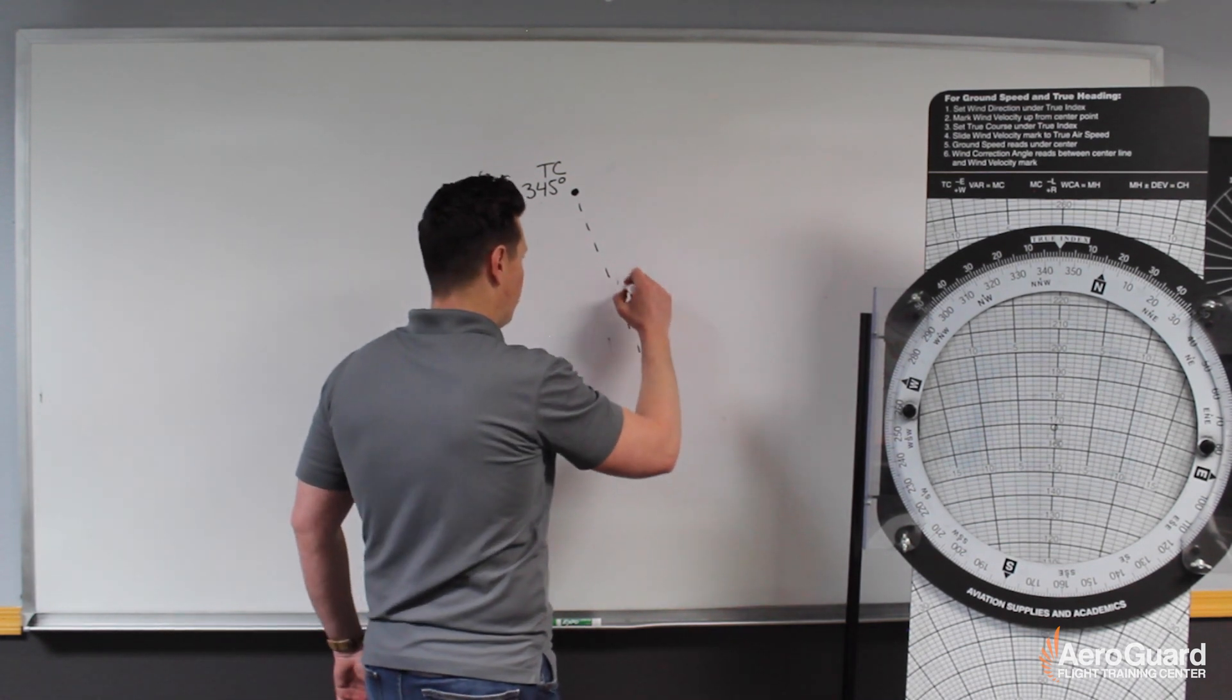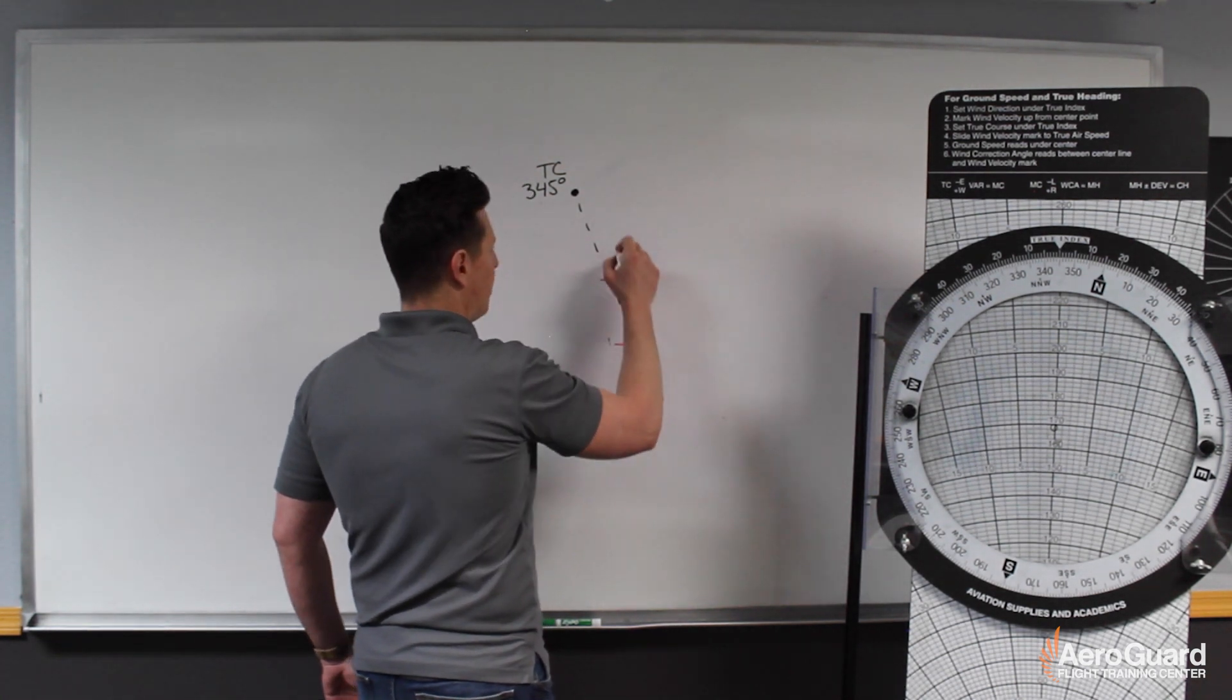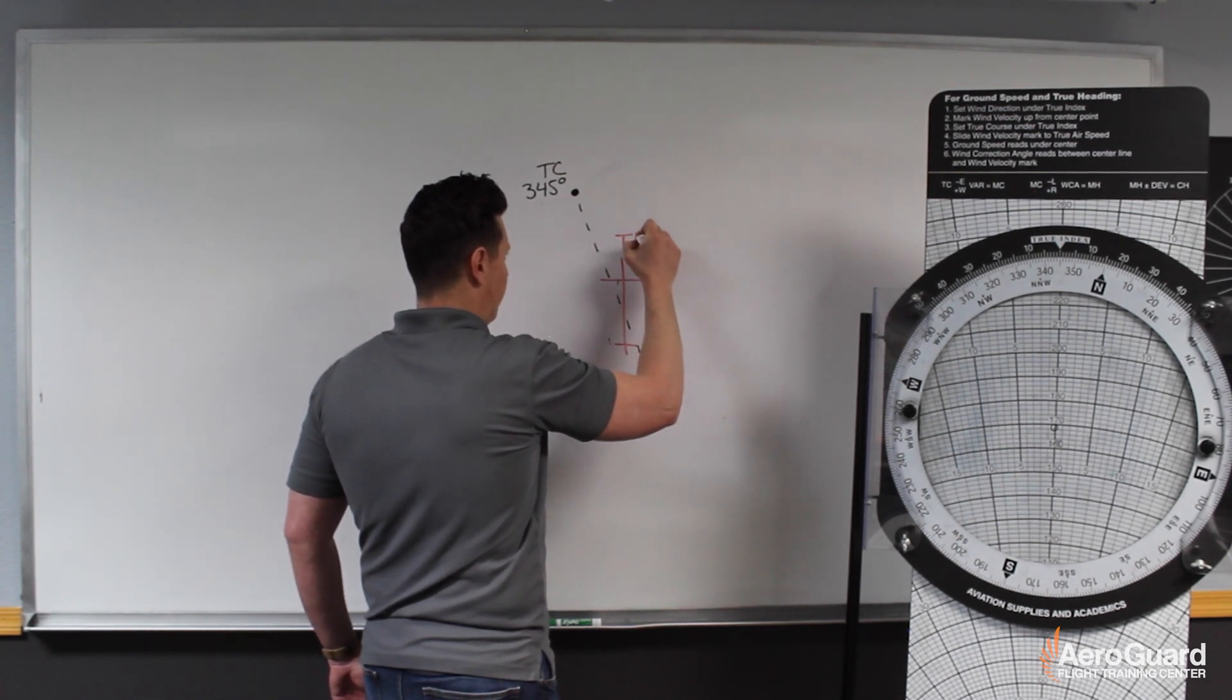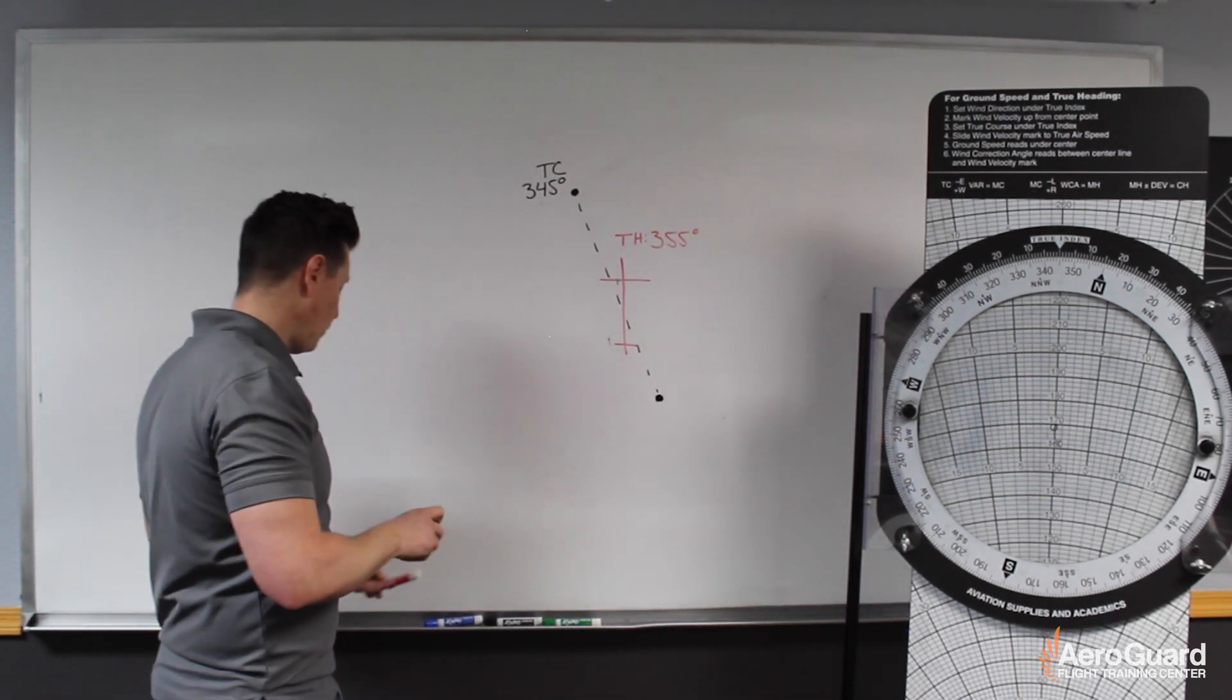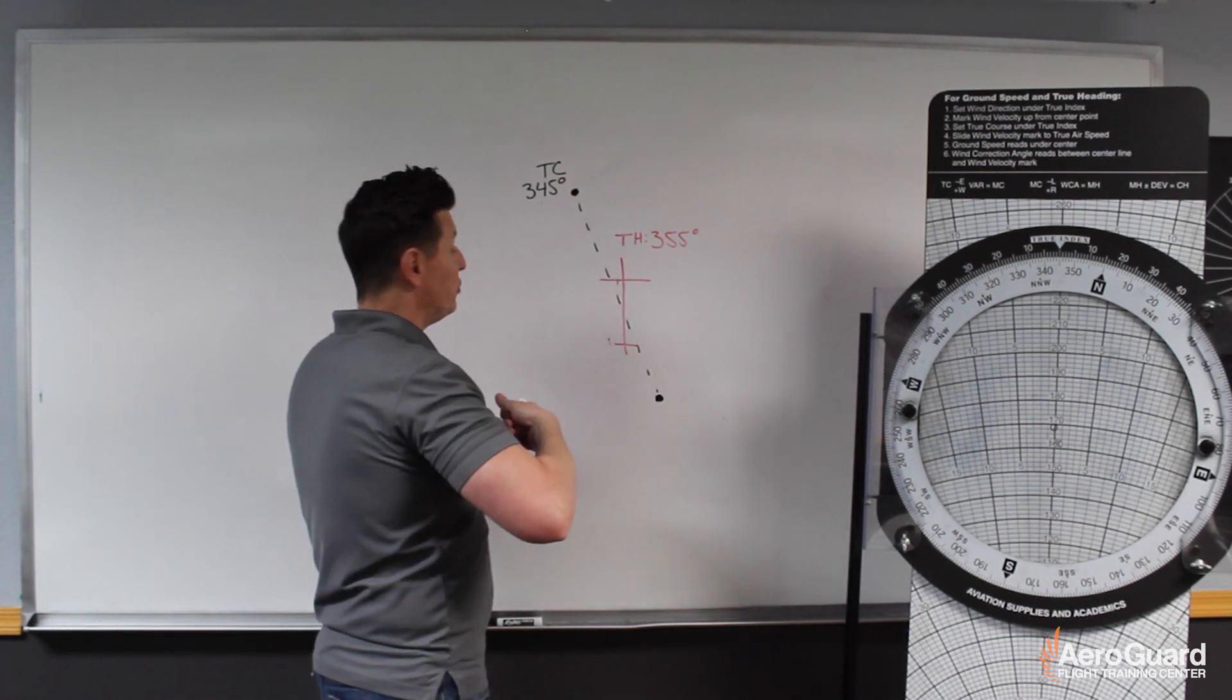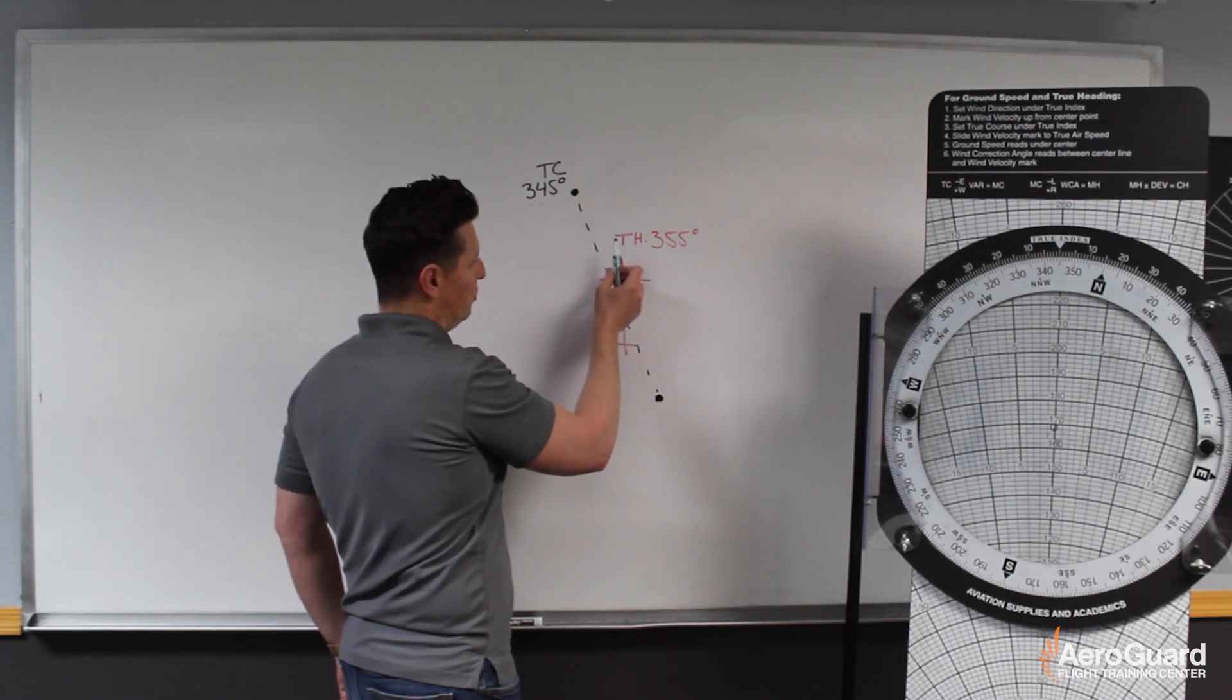So what I'll do is, I'll draw our airplane kind of along this track, and we'll say that our airplane is facing a true heading of 355 degrees. Okay, now what we can see just from this starting, we can see that there's an angular difference between this true course and this true heading.